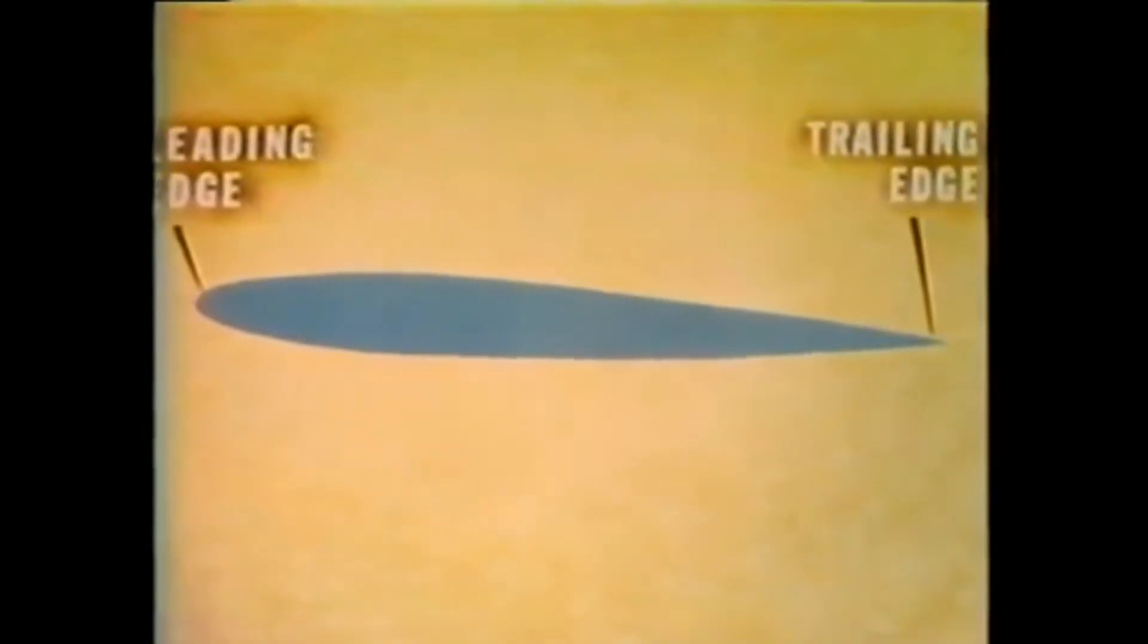And because these airfoils are so important aerodynamically, let's get to know their language. To begin with, they have a rounded leading edge and a pointed trailing edge. The center line from the center of the leading edge to the point of the trailing edge is called the cord line. We also speak of camber of an airfoil. Camber refers to curvature.